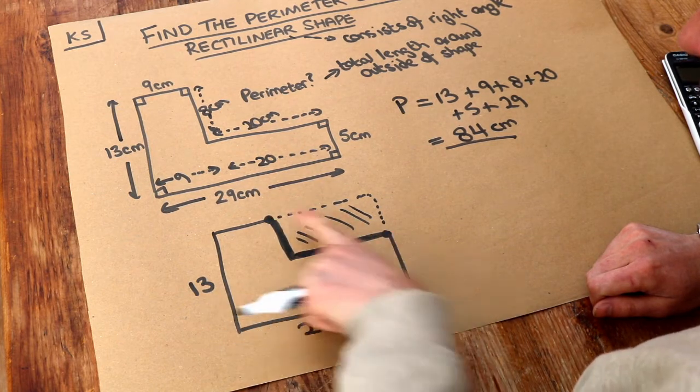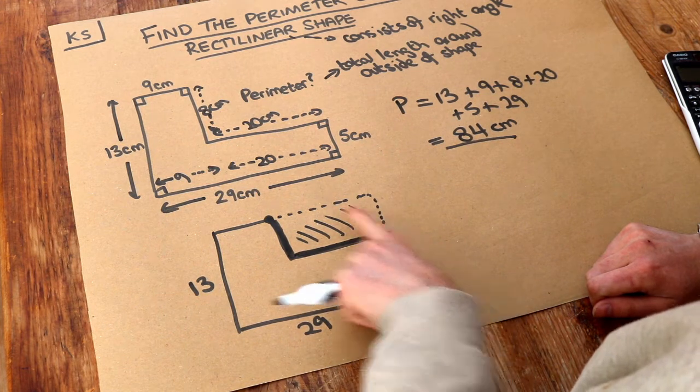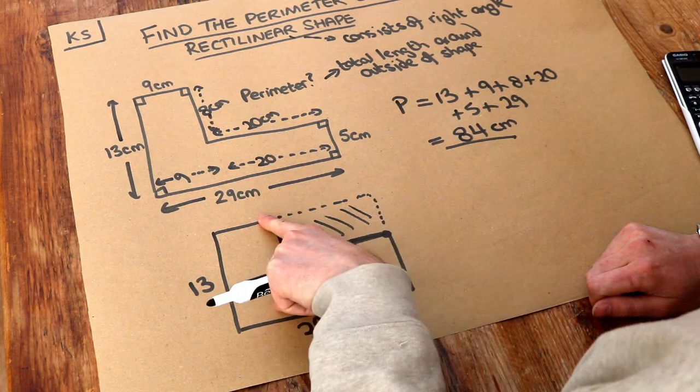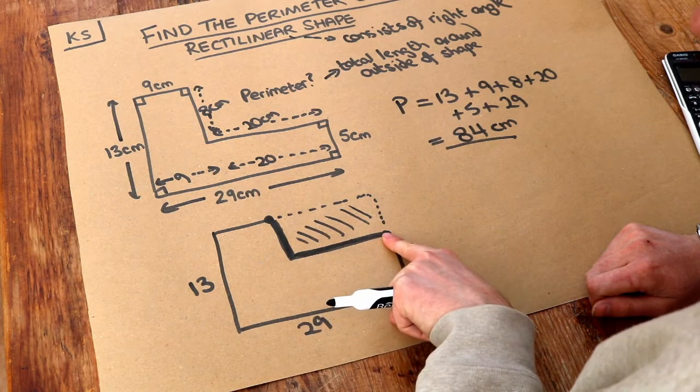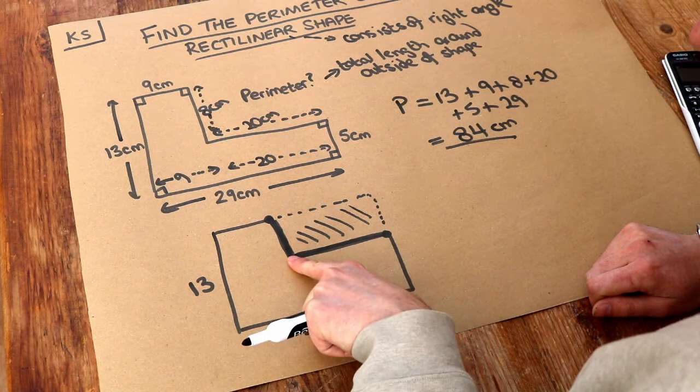Well, you could either walk around that way or you could walk around the swimming pool this way. But either way, you've walked the same distance. You've walked one length and one width here. You've walked one width and one length here. You've walked the same distance. So that total length here must be the same as that total length here.